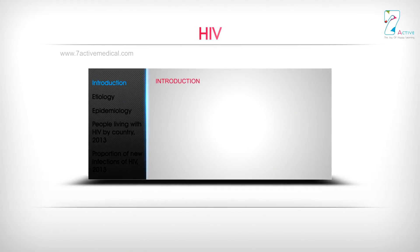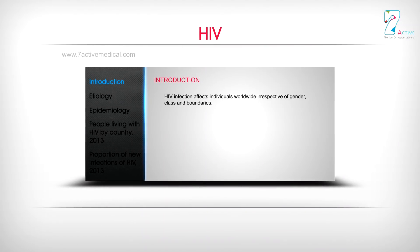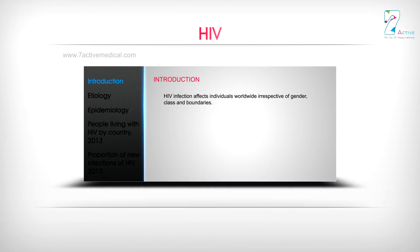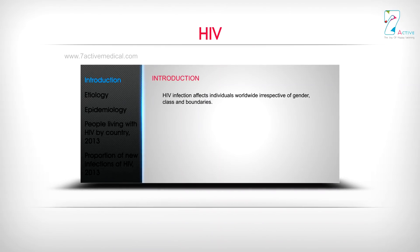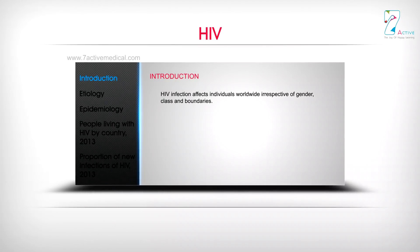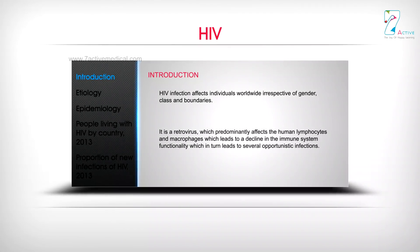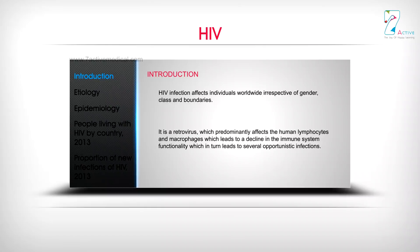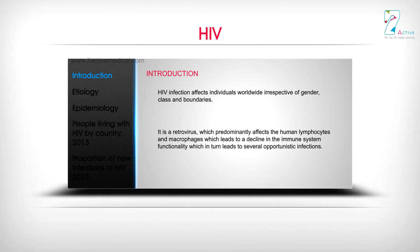Introduction: HIV infection affects individuals worldwide, irrespective of gender, class, and boundaries. It is a retrovirus which predominantly affects human lymphocytes and macrophages, leading to a decline in immune system functionality, which in turn leads to several opportunistic infections.